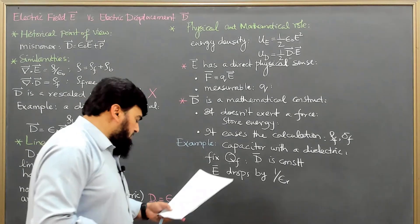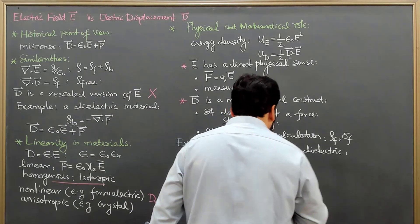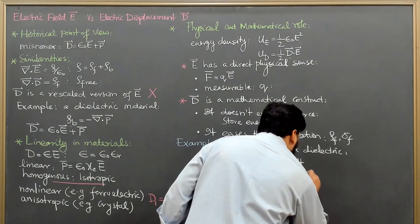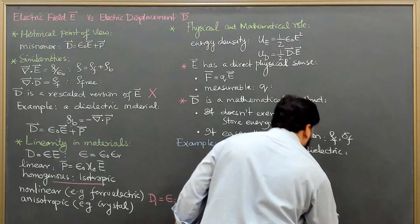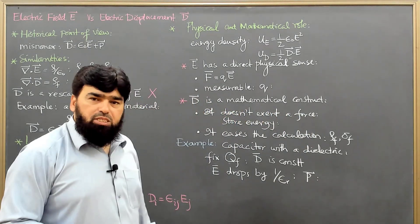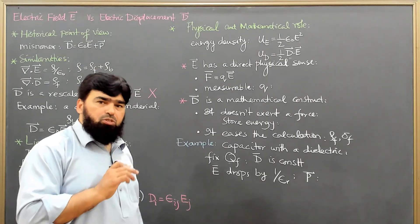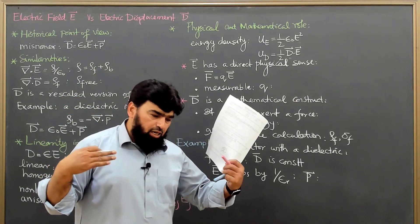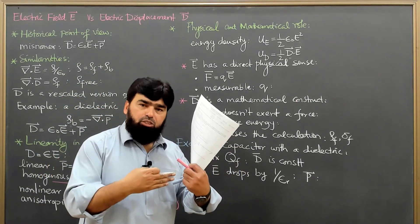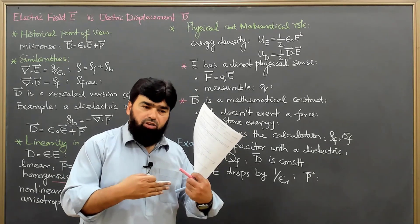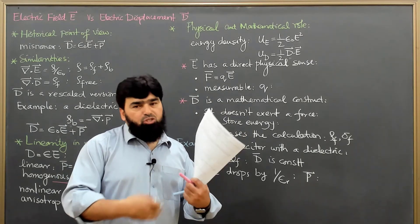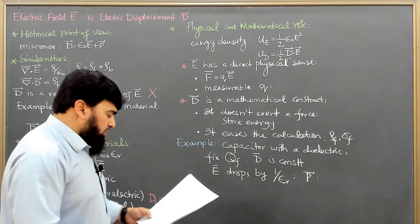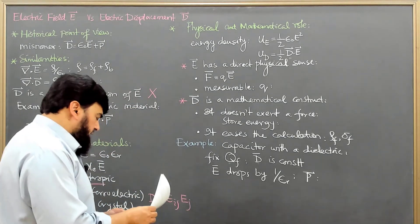E will drop by 1 over epsilon_r due to polarization. The polarization acts in the opposite direction to the external electric field, and that is why it drops the net value of the total electric field.